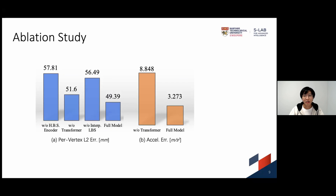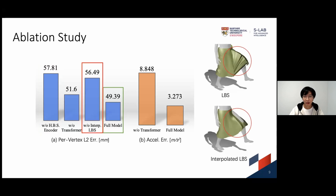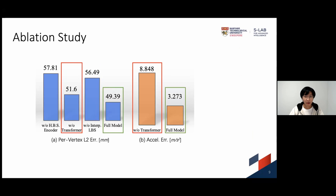Extensive ablation study demonstrates the effectiveness of the network design. Without the hierarchical body surface encoder, the per-vertex error increased by 8 mm, which emphasizes the importance of considering body-garment interaction. If we replace interpolated LBS with traditional LBS, the reconstruction error will increase by 7 mm, showing the importance of proposing reasonable candidates. Without the temporal transformer, the error as well as the acceleration error increase, showing that the temporal transformer not only helps the smoothness of sequential reconstruction, but also improves the quality of single-frame reconstruction.